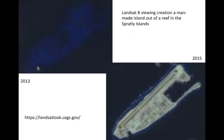True color imagery from Landsat 8 over Fiery Cross Reef in the South China Sea is shown here. In this well-known example, we can see the progression of a man-made island built in the South China Sea where, in 2013, higher reflectance from the ocean — hinting at a shallower ocean depth — was located.